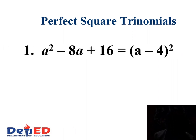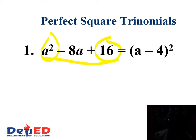For example, we have a² minus 8a plus 16. The first term and the last term are perfect squares, because the square root of a² is a and the square root of 16 is 4. What is the sign of the middle term? Negative. So therefore, we have the square of (a minus 4).